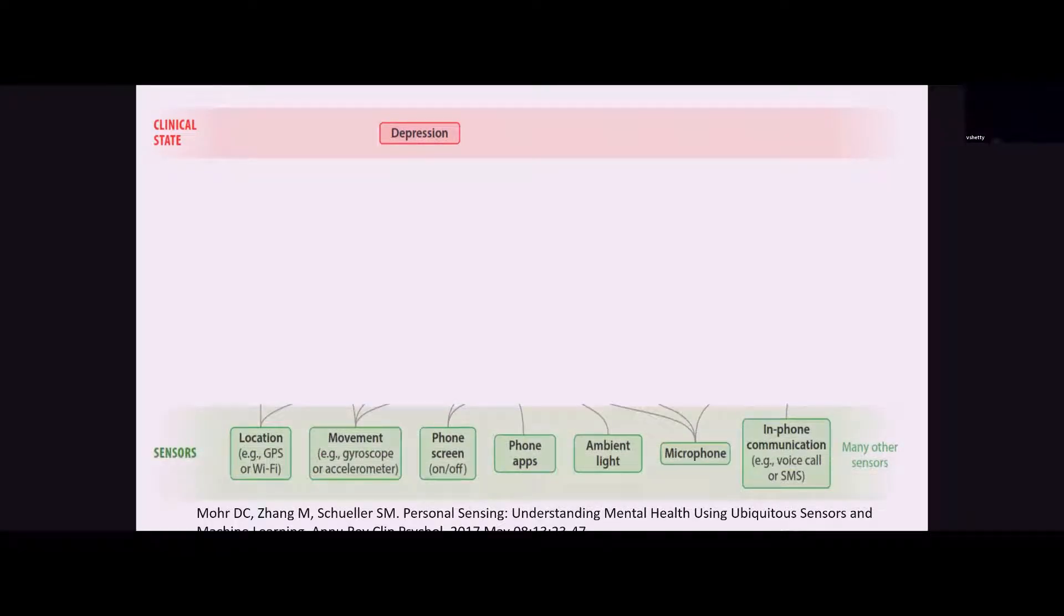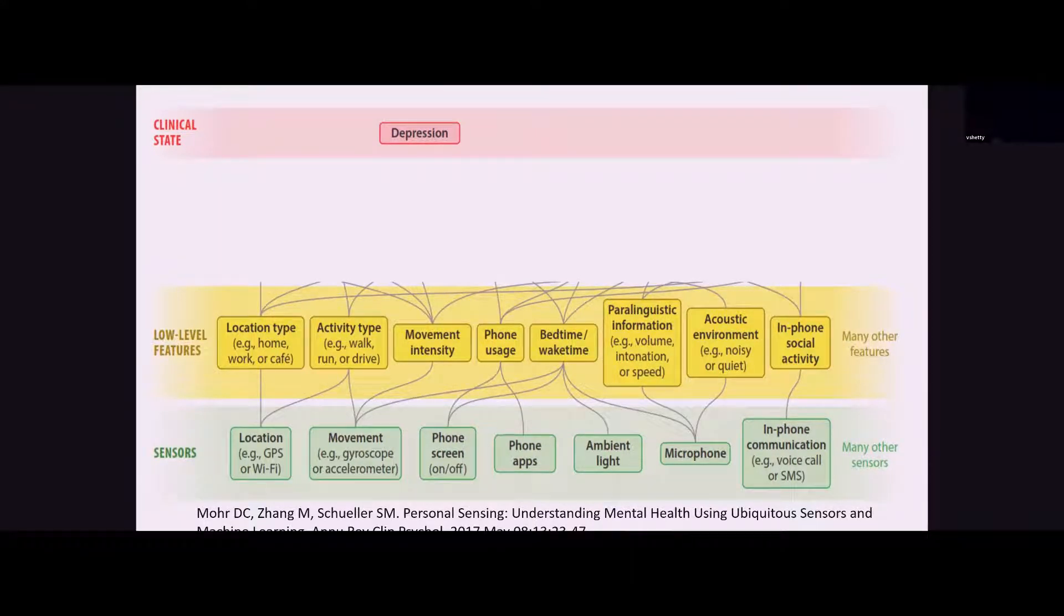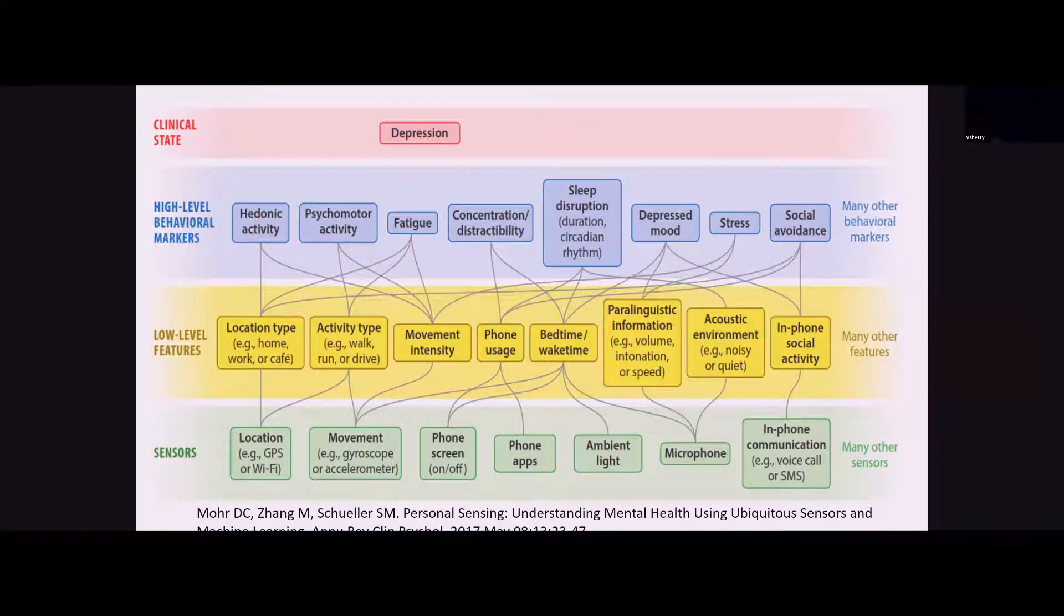Let us start with a clinical state like depression and explore ways in which sensors can be used. This paper from Mohr's group at Northwestern very nicely summarizes how raw data from sensors can be combined into high-level behavioral markers that can be used to infer clinical states like depression. Let's take, for example, sleep disruption, which is a core symptom of depression. These markers of sleep quality can be constructed from phone usage, bedtime, wake times, and then used to construct high-level behavioral markers.